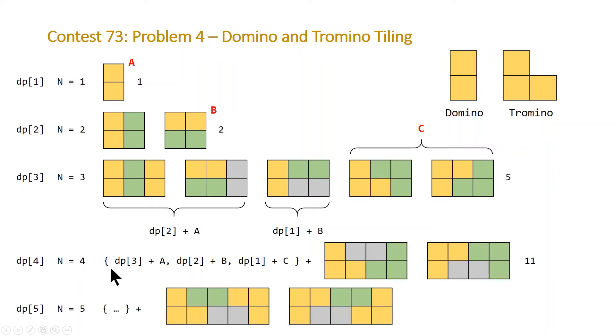So DP5 is going to have this same pattern. And at the end, we're going to have these two new boards which aren't a combination of any previous states. And so using this, we can create a recursive formula that's similar to a Fibonacci sequence that relies on our previous states to calculate our current state.